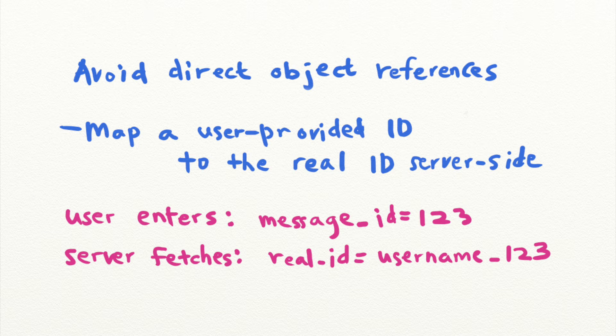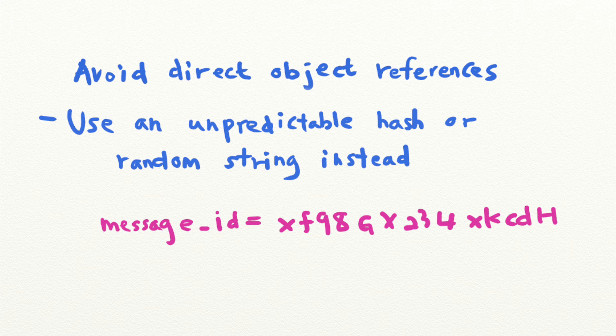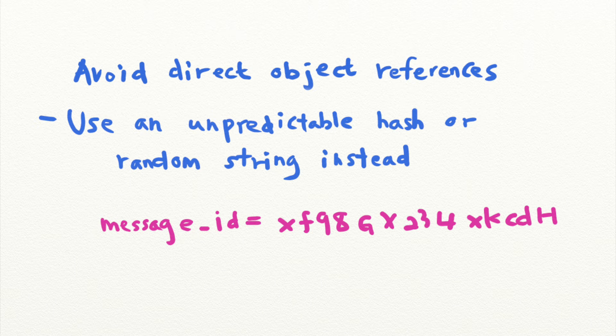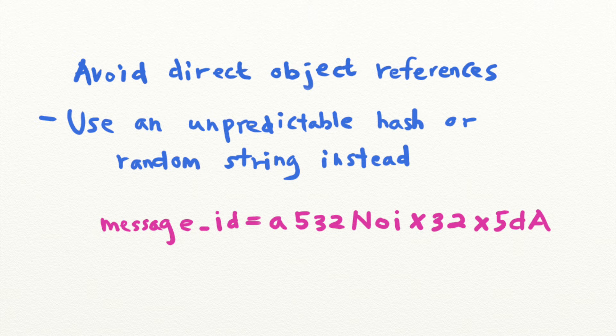The application can also use an unpredictable hash or random string to refer to objects instead of using a simple numerical ID. This makes it more difficult or even impossible to enumerate real data IDs and harvest the sensitive data of others.